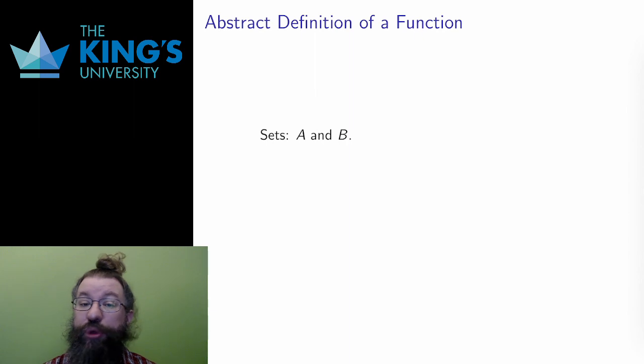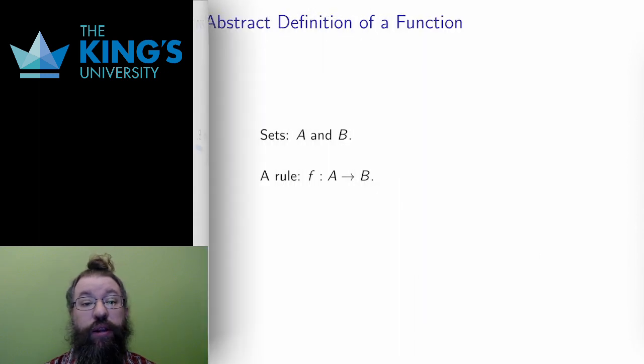Now that I've done the briefest of reviews of sets, let me give you the next idea of a function. Start with two sets, A and B. A function is a logical rule that takes things in one set and sends them to the other set. I write this with an arrow, and I say that the function f goes from the set A to the set B.